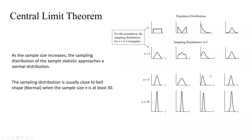As sample size increases, the sample statistic's distribution approaches a normal distribution. In the simulation, n only goes up to 25 because at n equals 30 you achieve a near-perfect normal distribution, and increasing n beyond 30 doesn't change the distribution significantly. So a sample size of 30 is a decent number to reliably attain this normal distribution.